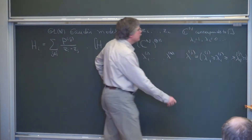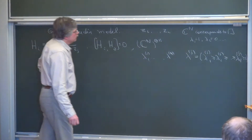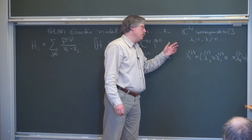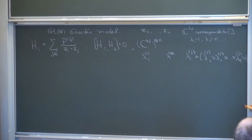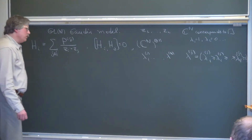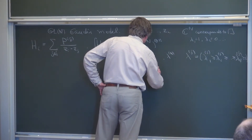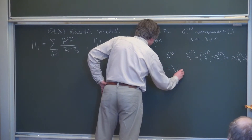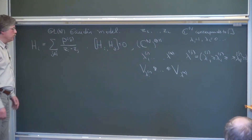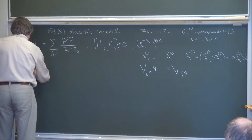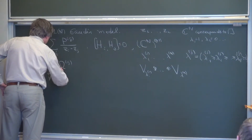I am thinking about GL rather than SL — for SL, the highest weight is really differences of lambdas, but it's more convenient for me to work with GL. So this is the vector representation, and what I am taking is the tensor product of irreducible representations corresponding to those partitions. These are so-called polynomial representations of the group.